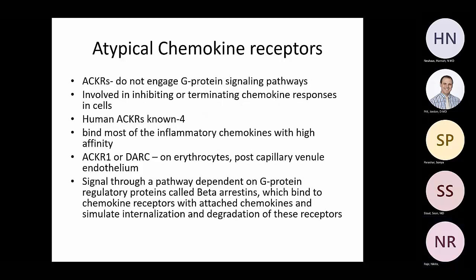Atypical chemokine receptors (ACKRs) are a newer concept. They do not engage the G-protein pathway used for typical chemokine-receptor signaling. Instead, they are involved in inhibiting or terminating chemokine responses. There are four known human ACKRs; they bind most inflammatory chemokines with high affinity. One is called ACKR1 or DARC. ACKRs signal through a pathway dependent on G-protein regulatory proteins called beta-arrestins.